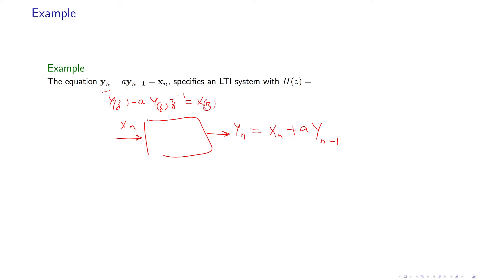And then if you calculate y of z divided by x of z, you get H of z, which is the transfer function. And this is Z transform of impulse response of this filter.